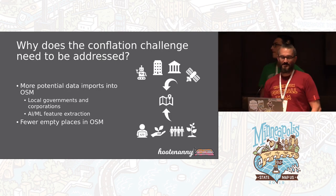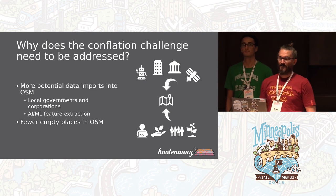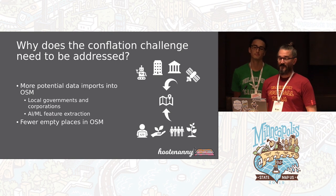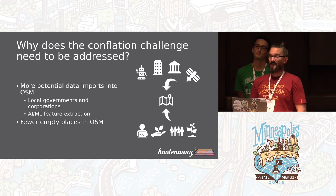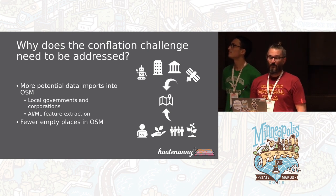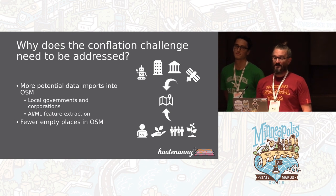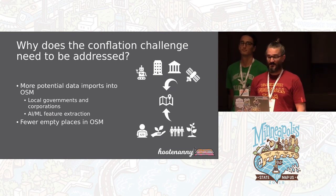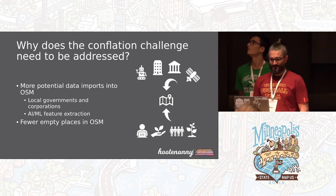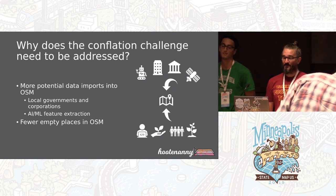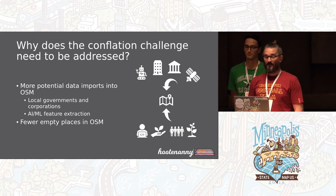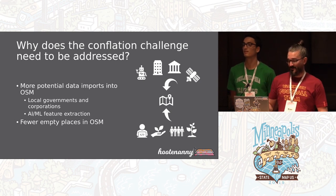Why does the conflation challenge need to be addressed? OpenStreetMap has built a global community of map curators at the grassroots level. Local governments and corporations have recognized the value of OSM and would like to contribute their data to it. A major source of new data will be automation, artificial intelligence, and machine learning, capable of producing batches of extracted buildings and roads. Because OSM has been so successful, most places covered by potential import data are not empty, and will require careful merging to avoid conflicting or duplicate data.